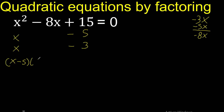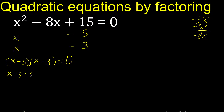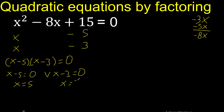By the zero product property, this factor equals 0 or this factor equals 0. Therefore x equals 5 or x equals 3.